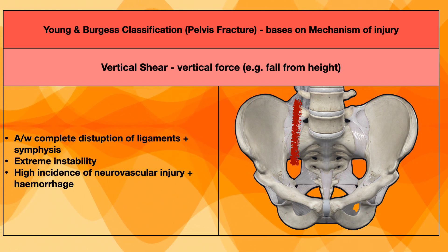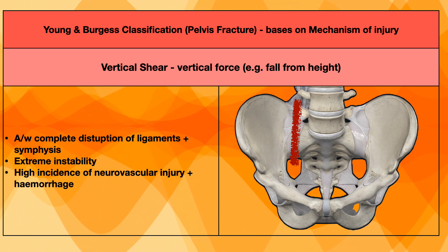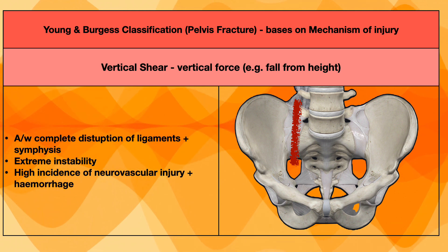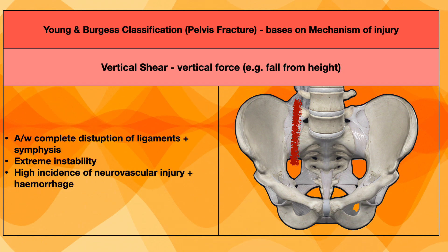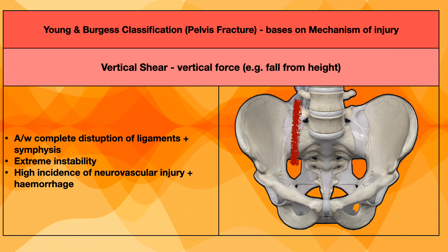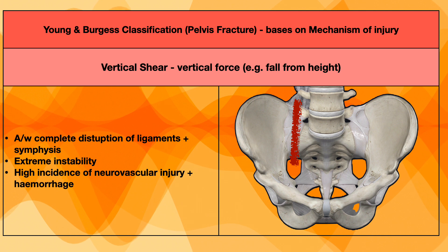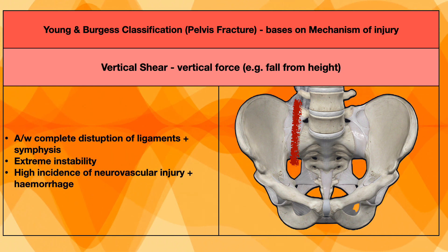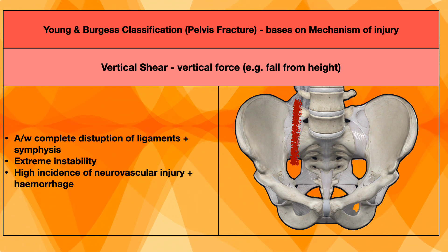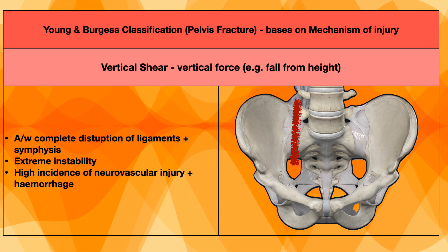Another type is vertical shear. In vertical shear, the force is from the vertical direction — for example, a fall from height landing on extended lower limbs. There will be a vertical force going on the pelvis, and this may lead to complete disruption of ligaments and symphysis on one side of the pelvis. It will lead to type 3 anteroposterior instability on one side, causing extreme instability. There is a high incidence of neurovascular injury and hemorrhage.